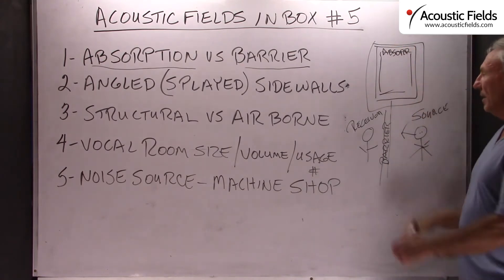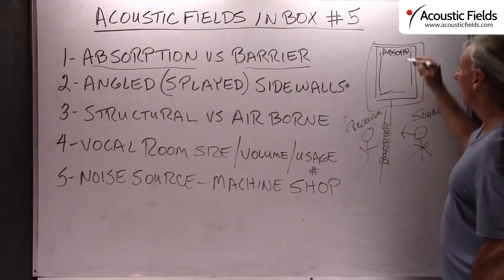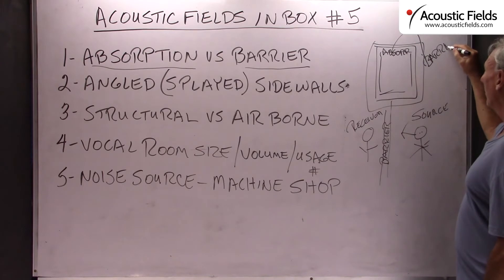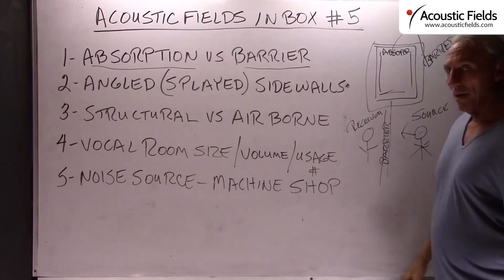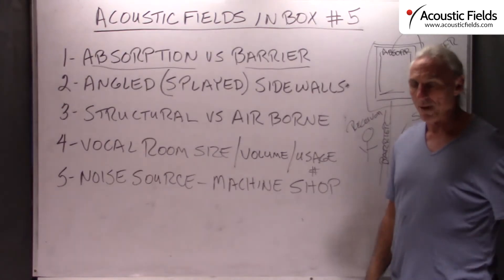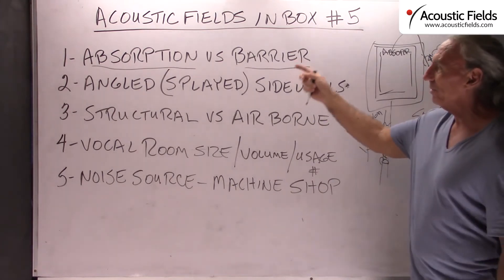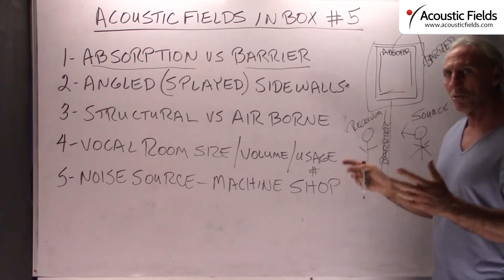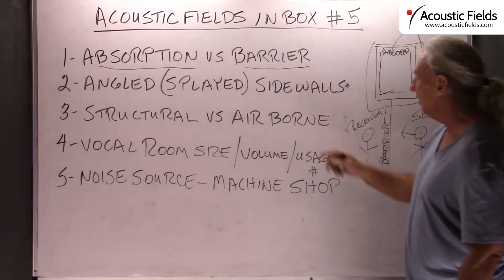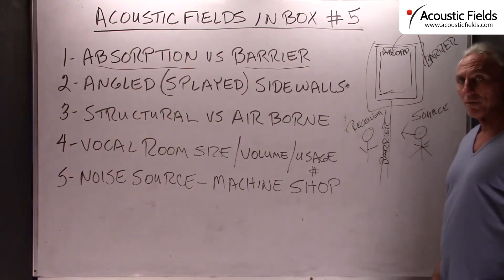Absorption is an inside treatment for reflections and all the issues that go on inside the room. You don't use absorption as a barrier — we get a lot of that. For example: 'I've got some foam and my neighbor is playing drums, I'll put some foam and that will stop the drum sound.' You have to be careful with the terms. Absorption lowers reflections and minimizes pressure within a room. A barrier isolates you and others from noise issues.